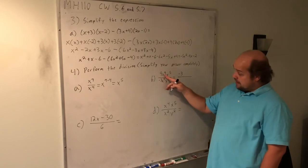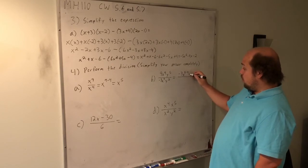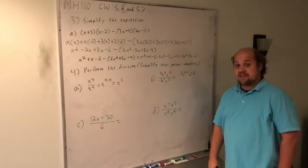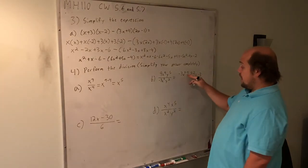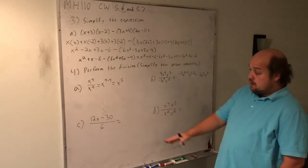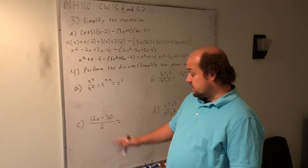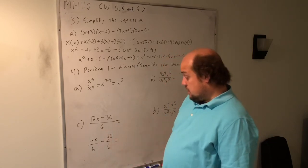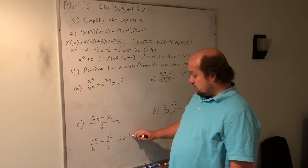I don't need a fraction line because every power was bigger on top, so nothing remains on the bottom. This gives me negative 3, x to the 5th — since 9 minus 4 is 5 — and y to the 3rd — since 5 minus 2 is 3. Part C is really just asking me to properly break this into two fractions. Instead of calling this 12x minus 30 over 6, I can call it 12x over 6 minus 30 over 6. 6 goes into 12 twice, so that gives me 2x. 6 goes into 30 five times, so that's how I get minus 5.